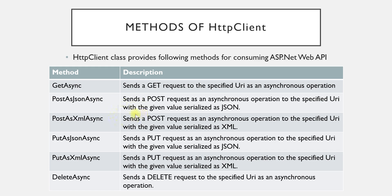Whenever we send a POST request, we send some data to the server. If you want to send your data in JSON format, you can use the PostAsJsonAsync method; if you want to send it in XML format, you can use the PostAsXmlAsync method. Similarly, for PUT requests there are two options: PutAsJsonAsync and PutAsXmlAsync. The last method is DeleteAsync, which is used to send a DELETE request. We are going to see all these methods practically from the next video onward.